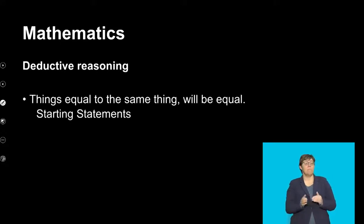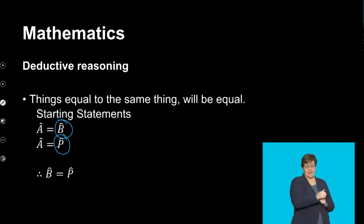One other example as well of this concept of deductive reasoning is if I have angle A being equal to angle B, and also angle A being equal to angle P. This can be in two different shapes. It can be in one shape. It does not really matter. This therefore simply means that B will also be equal to P because both of them are equal to the angle A. As a result, angle B is equal to angle P. And that's how you can then look at the concept of deductive reasoning.